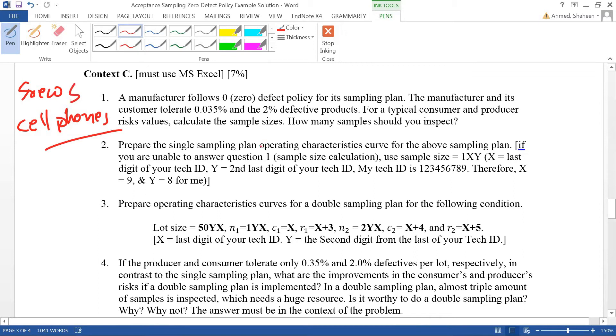In that case, the acceptance number c is zero. The manufacturer and customer tolerates about 0.035 percent, so the acceptable quality limit for the manufacturer is 0.035 percent, and the rejectable quality limit for the customer is given as two percent.